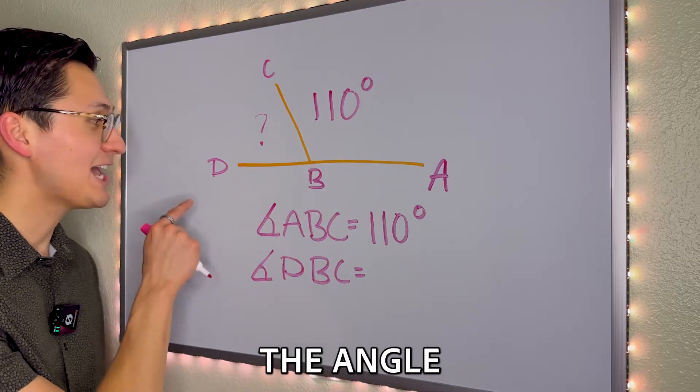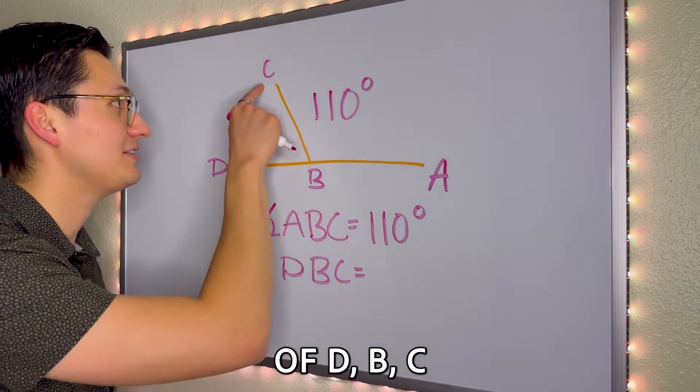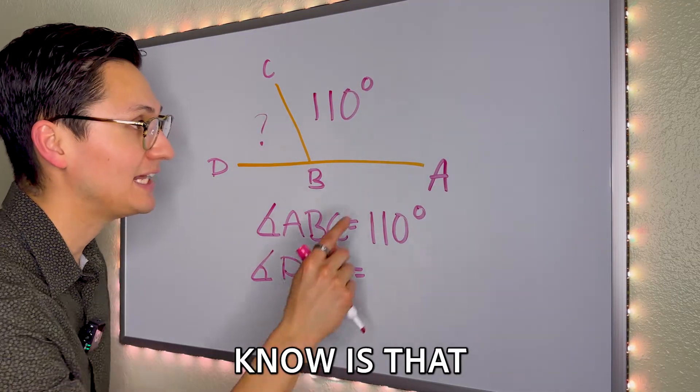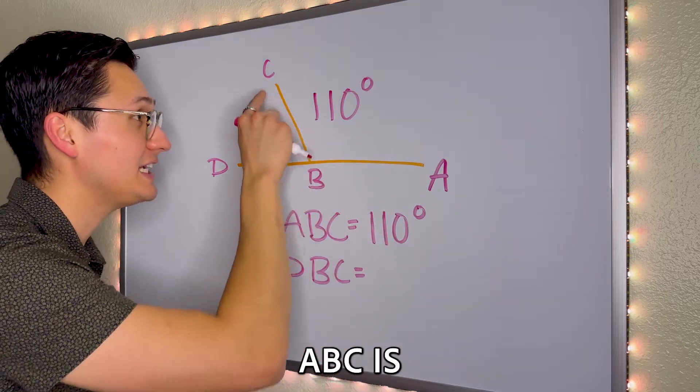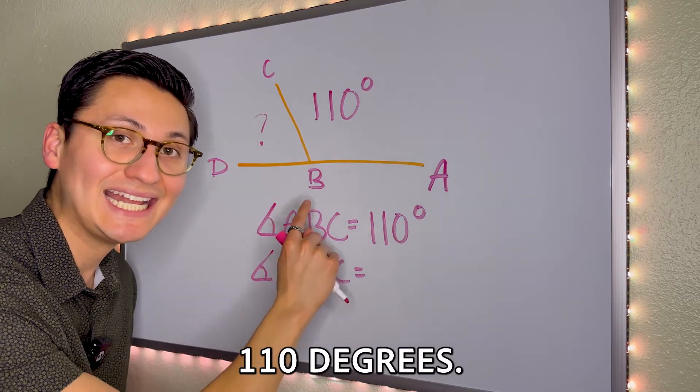For this problem, we need to figure out the angle of D, B, C. What we do know is that angle A, B, C is 110 degrees.